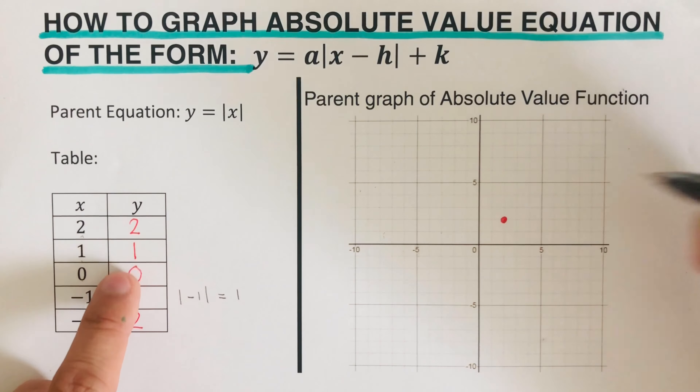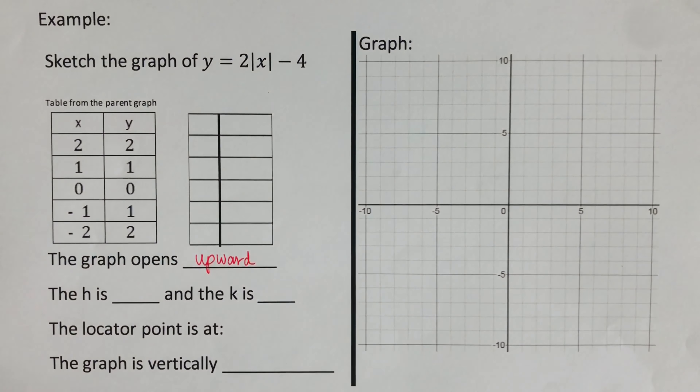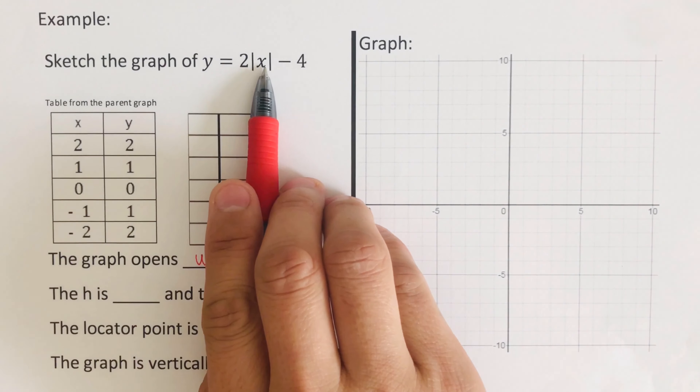Now we're ready to graph this. We start with (2, 2), so x is positive 2 and y is positive 2. Then (1, 1), then the origin (0, 0), then (−1, 1), and then (−2, 2). Now we connect these points together, and this would be the parent graph of an absolute value function.